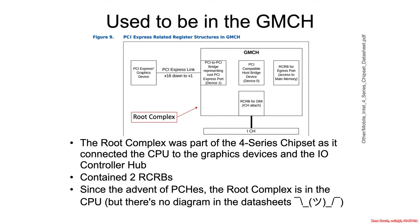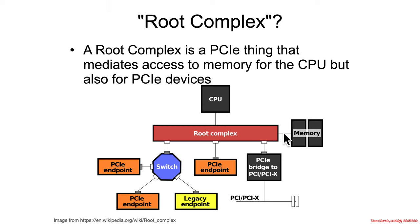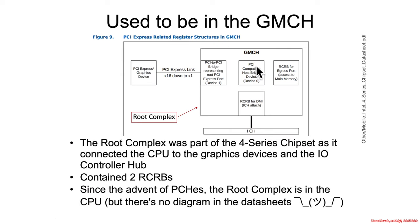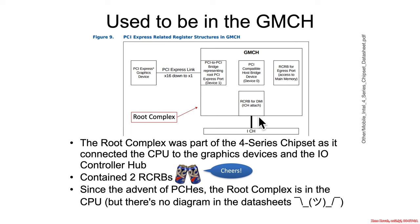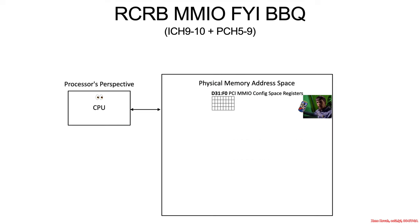Back in the old data sheets, the root complex register block was shown a little more clearly. In the old Northbridge/Southbridge world, you had the graphics and memory controller hub. Since the root complex mediates access to memory, and back in the day the memory controller hub had direct access to memory before it was merged during the great PCH merger, it makes sense that root complexes would be inside the memory controller hub. There were actually two root complex register blocks: one for the egress port — access to main memory — and one for DMI, the interface down to the ICH. Nowadays on PCH-based systems, the root complex is in the CPU, though Intel's documentation doesn't make this easy to visualize.